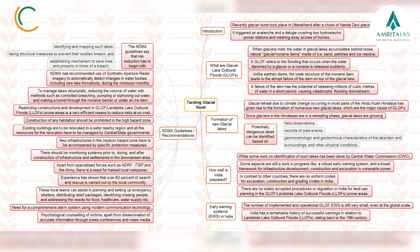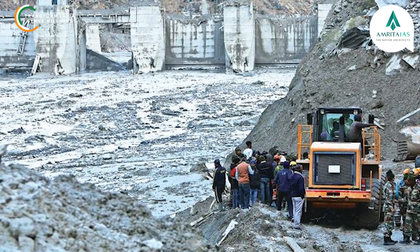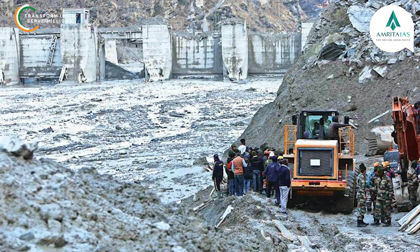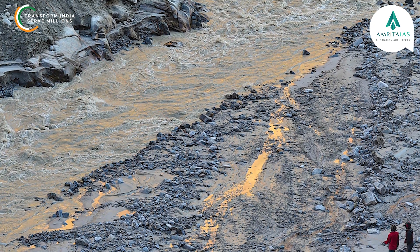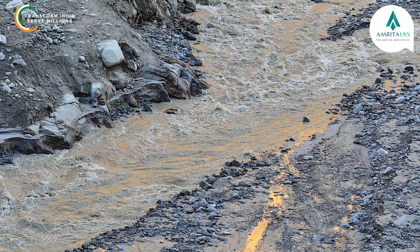The National Disaster Management Authority guidelines suggest that risk reduction can be done by identifying and mapping potentially dangerous lakes, taking structural measures to prevent their sudden breach, and establishing mechanisms to save lives and property in times of a breach. The floods in Uttarakhand have claimed many lives, which serve as a deadly reminder that this fragile, geologically dynamic region can never be taken for granted.